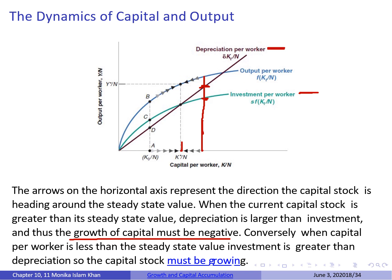Conversely, when capital per worker is less than the steady state value, investment at that point is greater than the depreciation of capital stock. Since investment exceeds depreciation, capital stock must be growing. We can therefore use this graph to explain the growth of capital stock whenever current capital is above or below the steady state value.